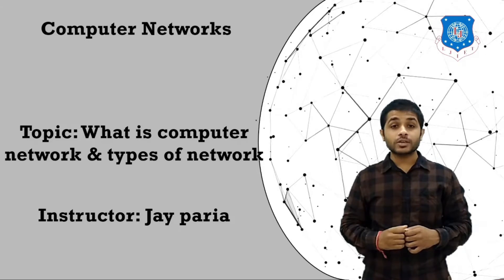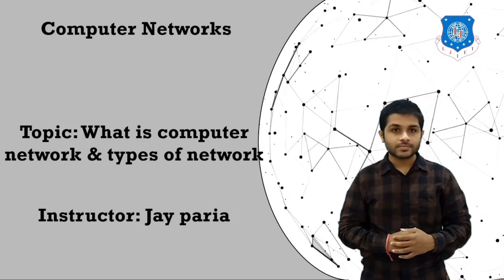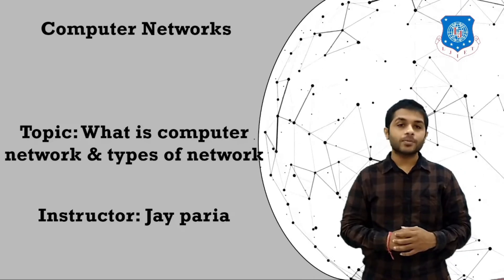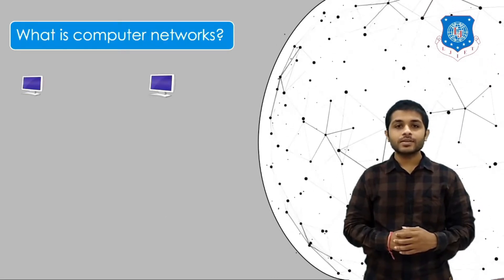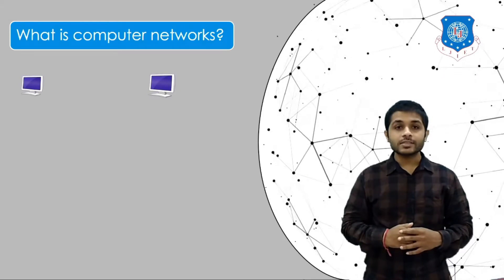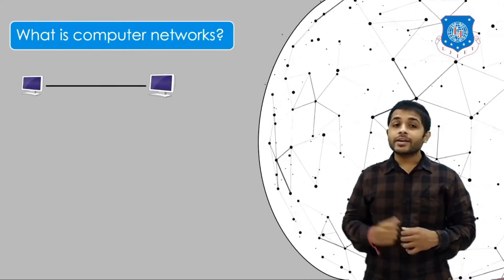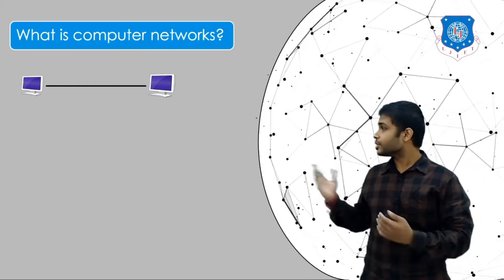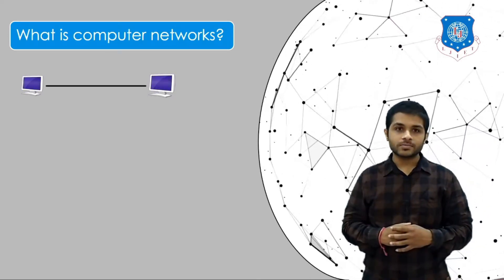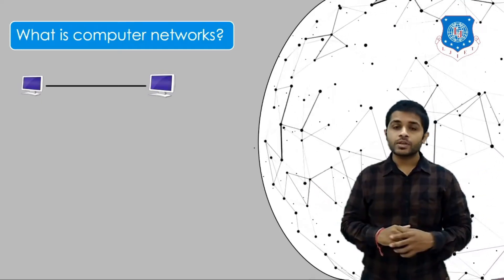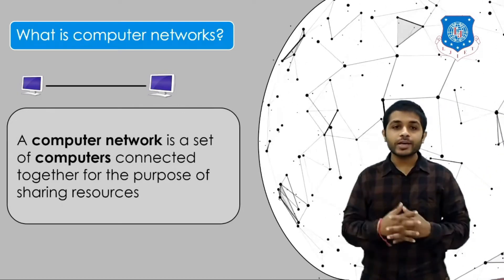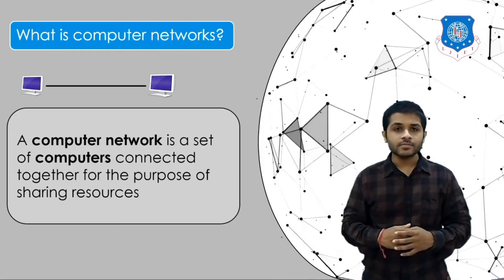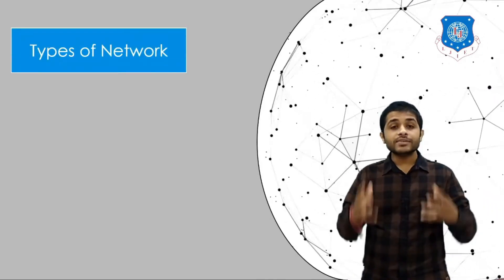Hello everyone, this is Joy, your instructor for computer networks. Today we are going to see what is a computer network and its types. When two devices are connected via a dedicated link and can share resources with each other, it is called a computer network. The link can be wired or wireless. By definition, a computer network is a set of computers connected together for the purpose of sharing resources.